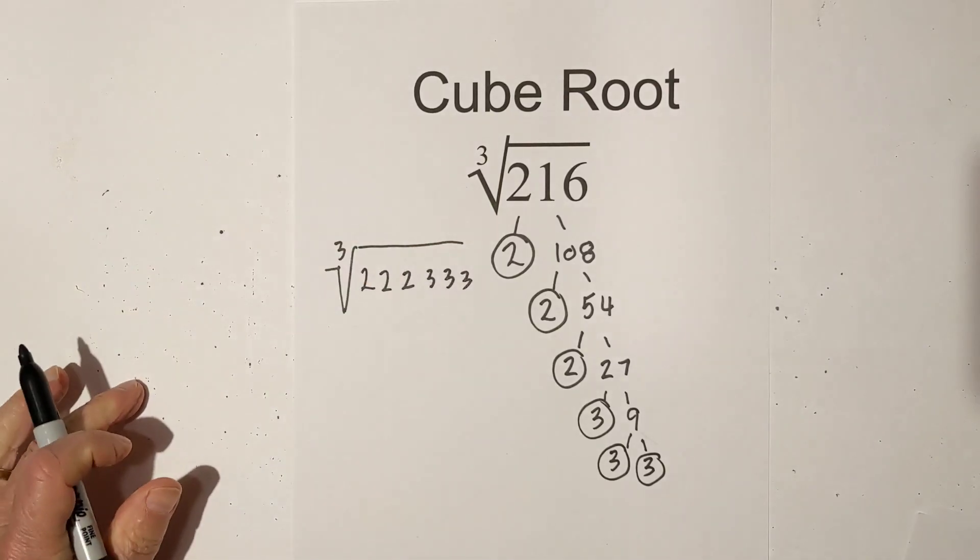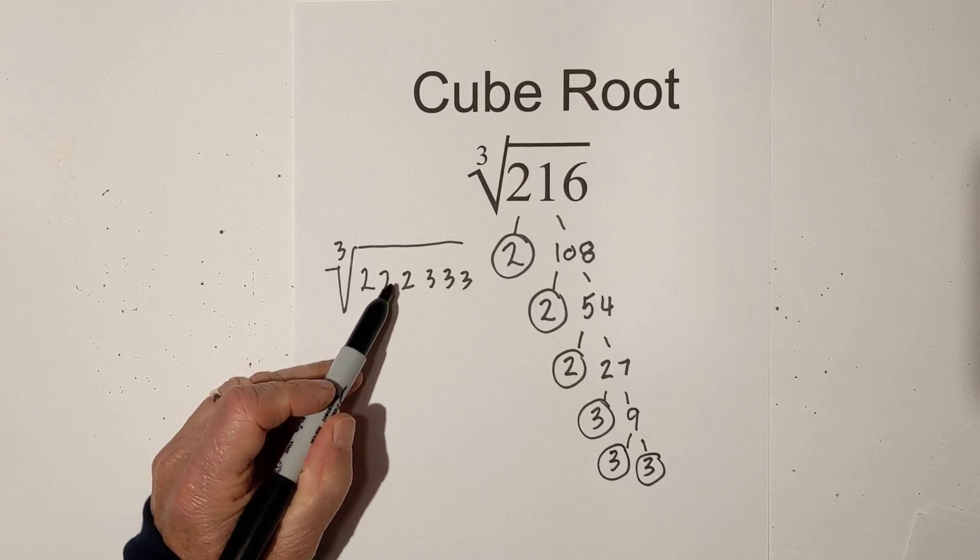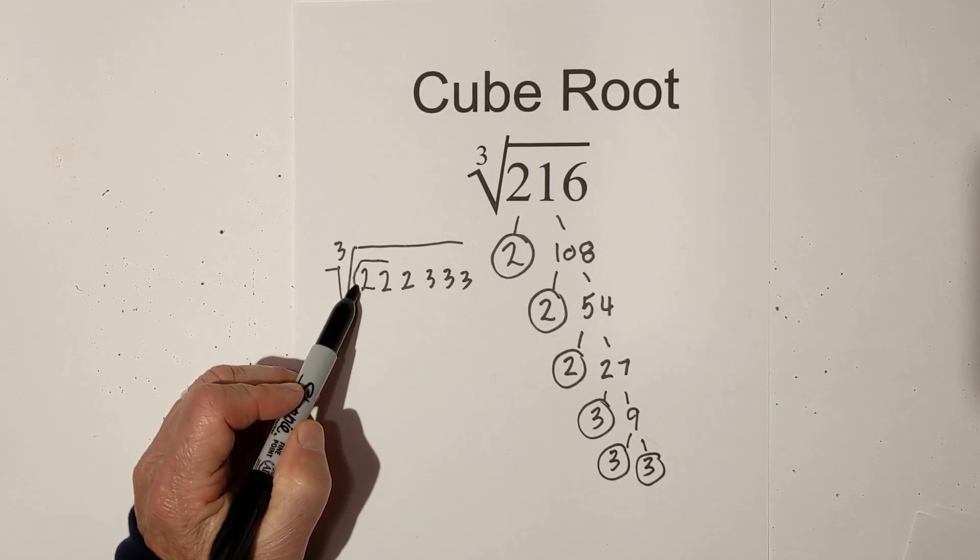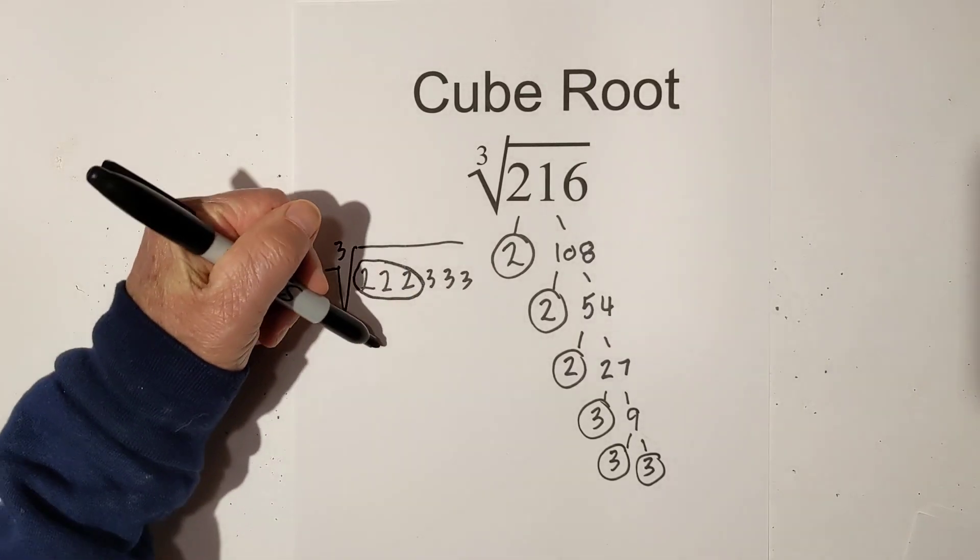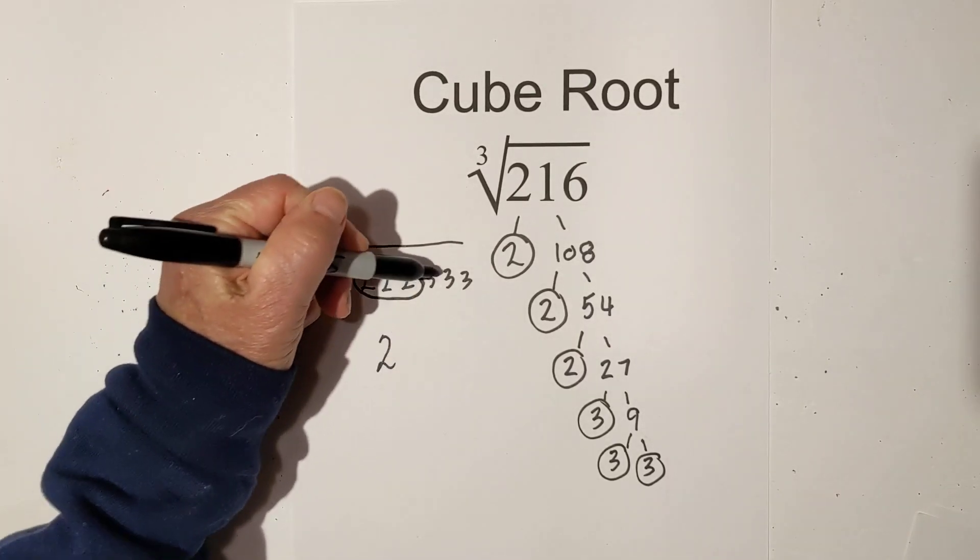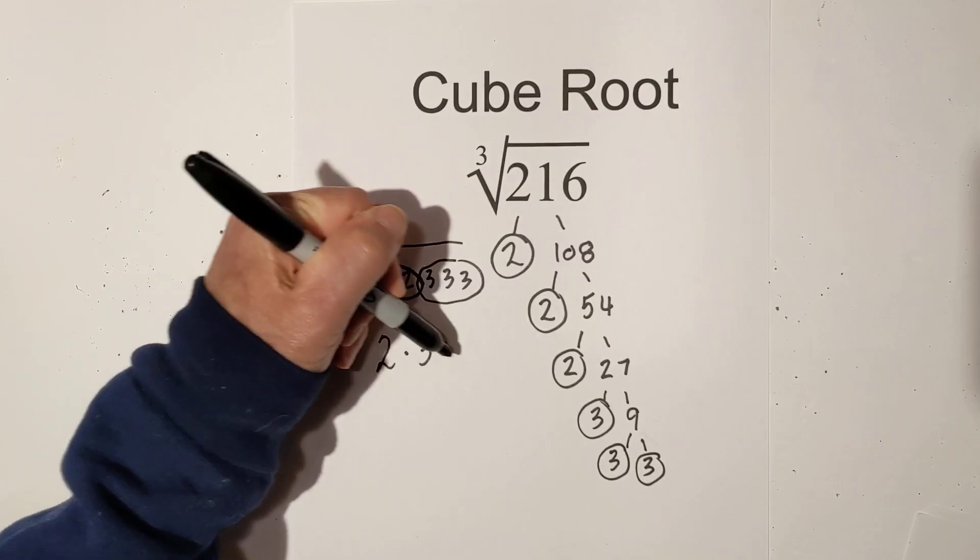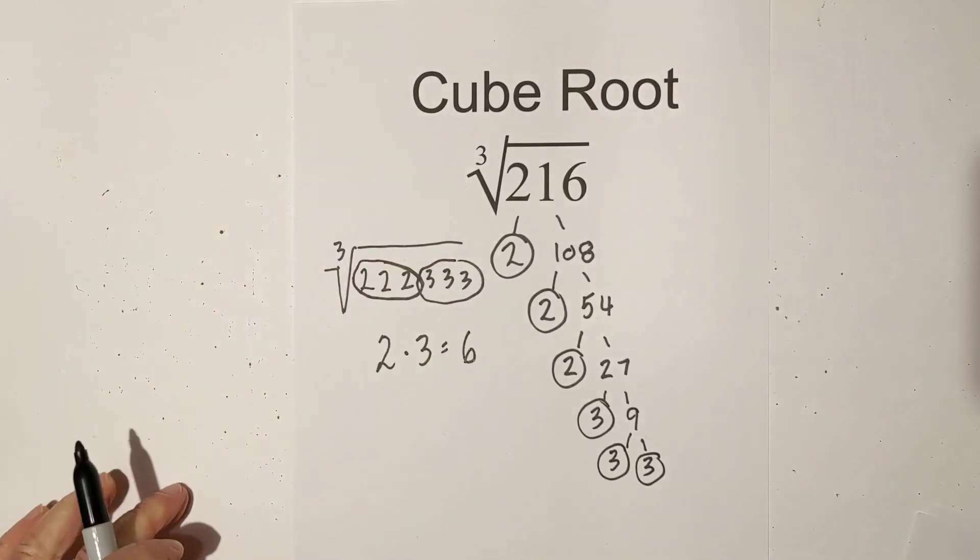So now the deal is if you have groups of 3, you can take them out from under the sign but you only take one number. So here is a group of 2's, so I'll take that out so we have 2 and here is a group of 3's. So I'll take the 3 out, multiply 2 times 3, that is 6.